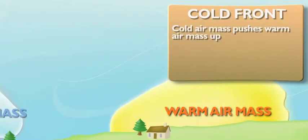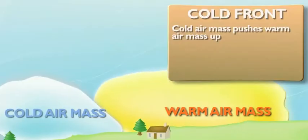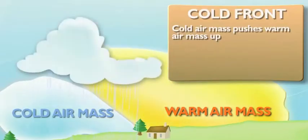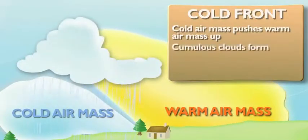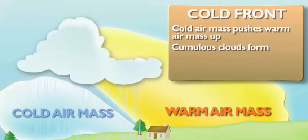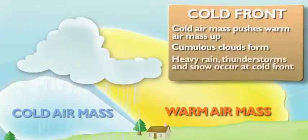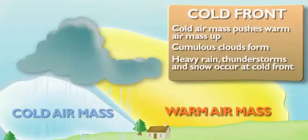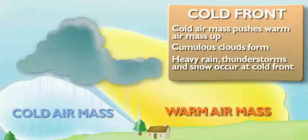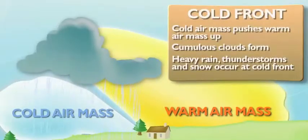This snowstorm is a result of a cold front. Cold fronts happen when a cold air mass pushes a warm air mass up. Big puffy clouds called cumulus clouds are formed. When you see dark clouds like those, you can bet you're in for some heavy rain, thunderstorms, or a snowstorm like this.